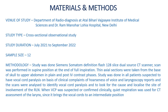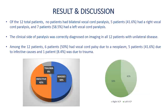When VCP was suspected or confirmed clinically, quiet respiration was used for CT assessment of the larynx, since it brings the vocal cords to an intermediate position. Of the 12 total patients, no patient had bilateral vocal cord paralysis. Five had right cord paralysis and 7 patients had left vocal cord paralysis. The clinical side of the paralysis was correctly diagnosed on imaging in all 12 patients with unilateral disease.